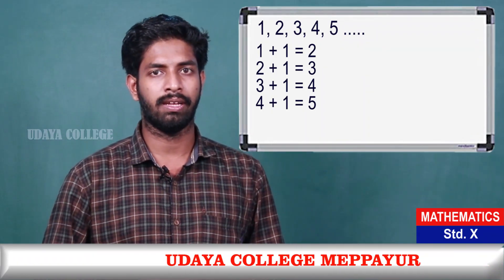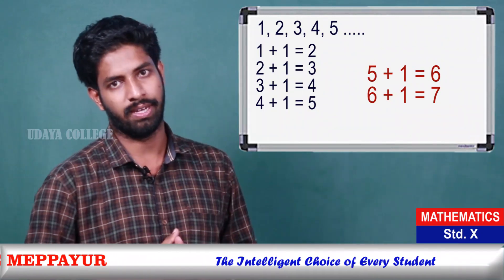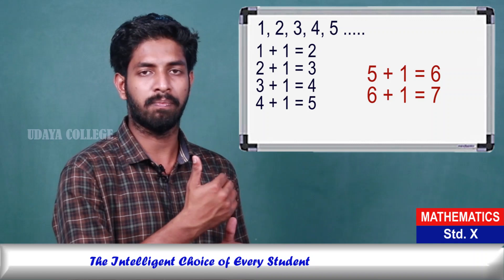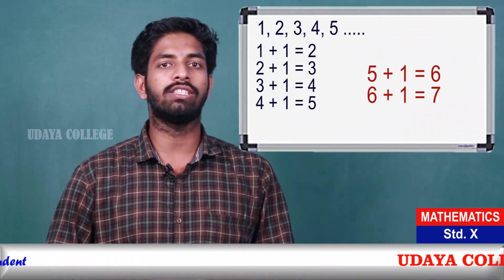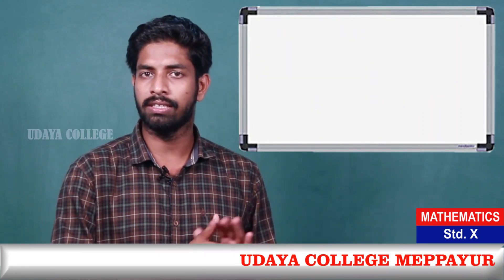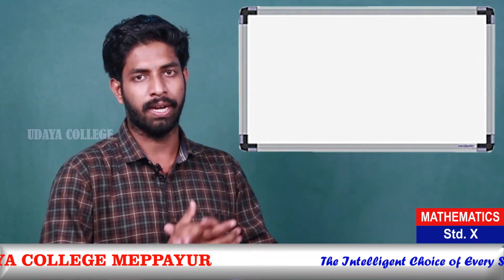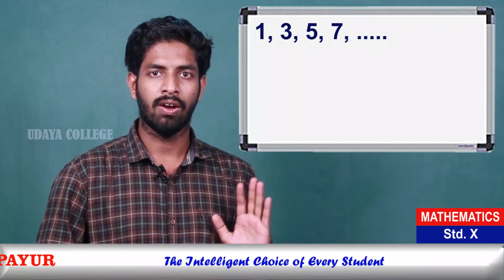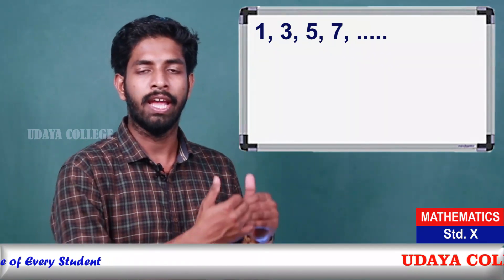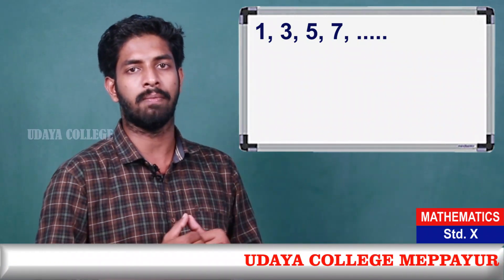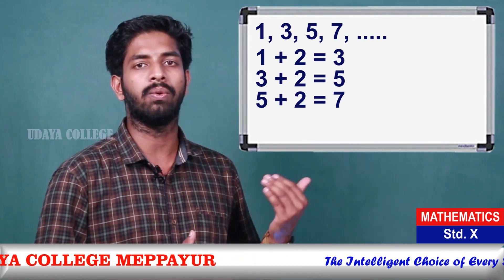Another pattern is: 1, 2, 3, 4, 5. And another: 1, 3, 4, 5. Then: 1, 3, 5. Then: 1, 3, 5, 7. These are different number patterns.